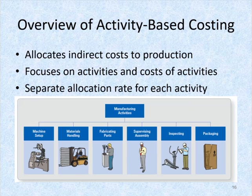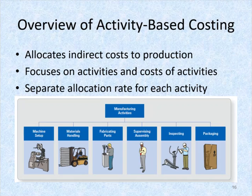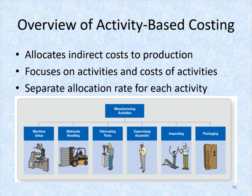Let's take a much closer look at activity-based costing. Activity-based costing is essentially a refined costing system that reduces cost distortion to a minimum, and it's a way to allocate indirect overhead cost to production.